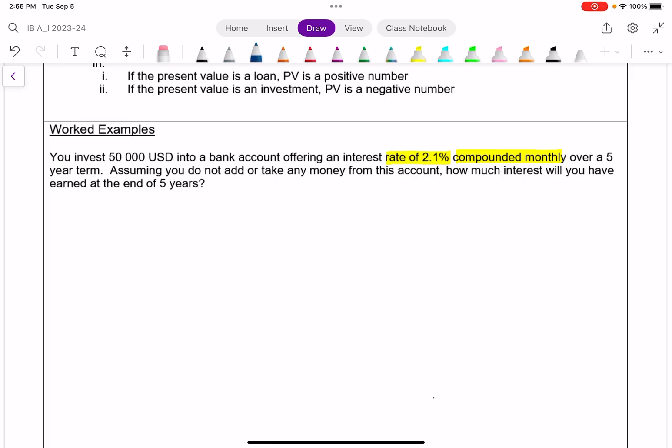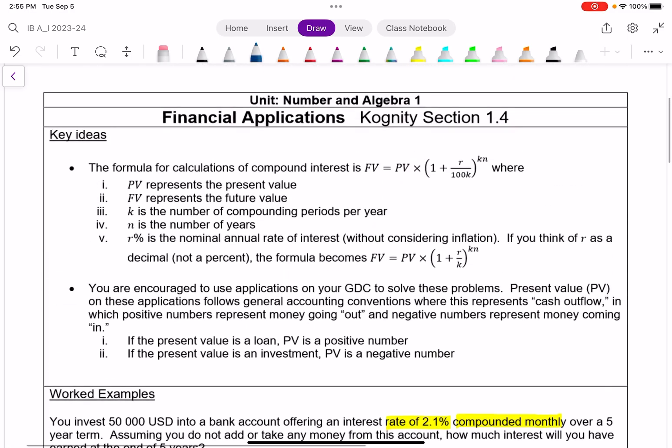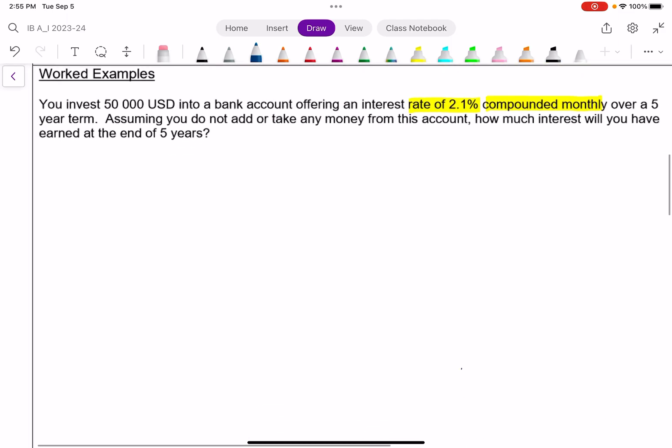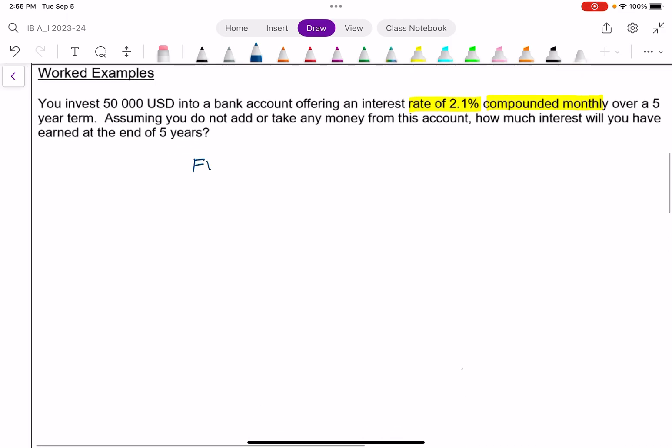And so for this, we have a couple options. One is to use this formula here, which is just a variation of what we saw with geometric sequences. And so the future value equals the present value times 1 plus the rate divided by 100 to turn into a percent, as well as divided by the number of compounding periods, to the power of the number of compounding periods times the time in years.